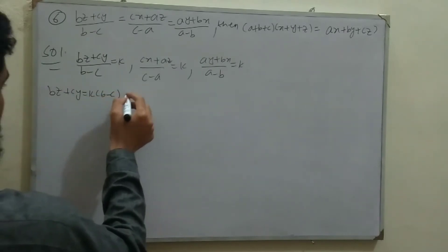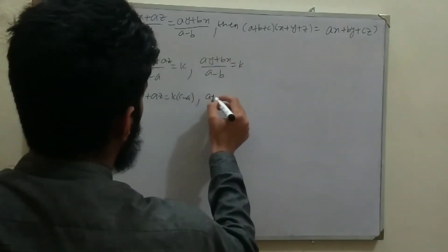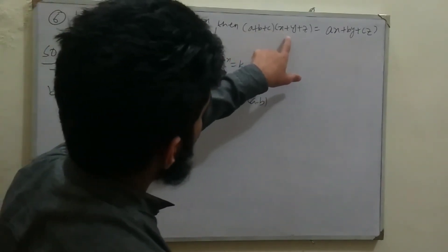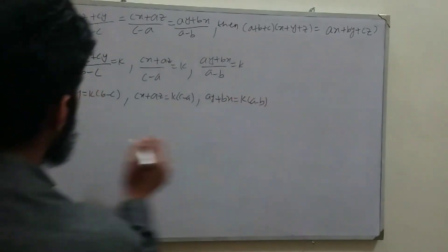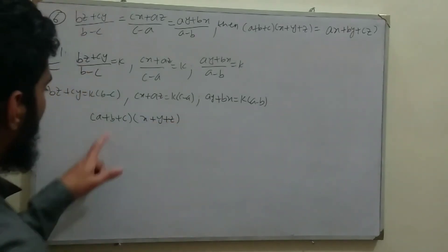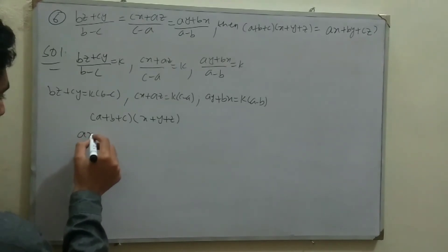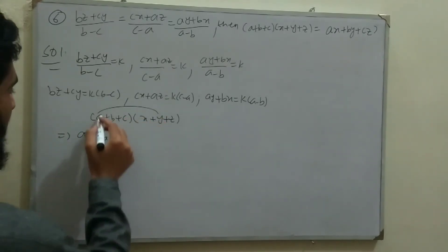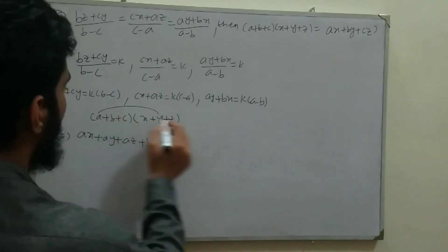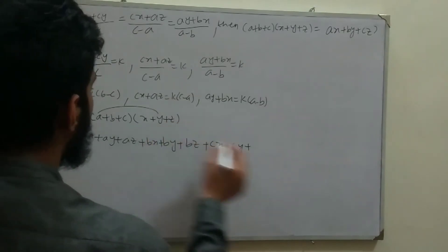We need to prove (a+b+c)(x+y+z) = ax+by+cz. Expanding (a+b+c)(x+y+z) gives: ax+ay+az + bx+by+bz + cx+cy+cz. Now we identify groups: bz+cy = k(b−c), cx+az = k(c−a), and ay+bx = k(a−b). The remaining terms are ax+by+cz.